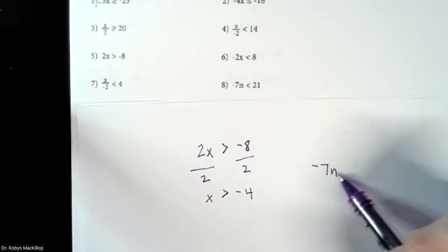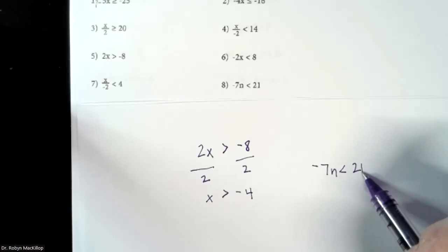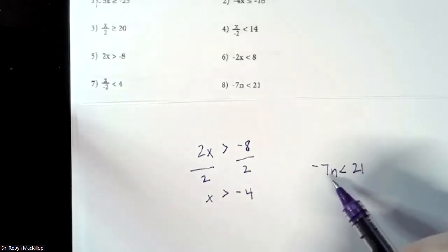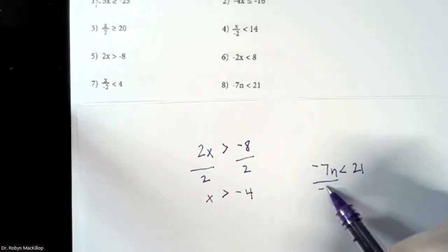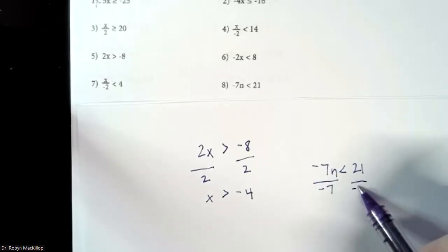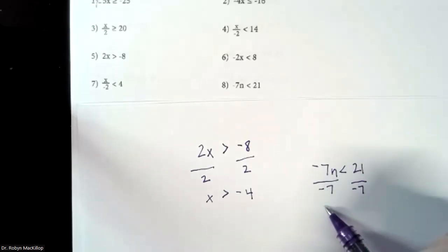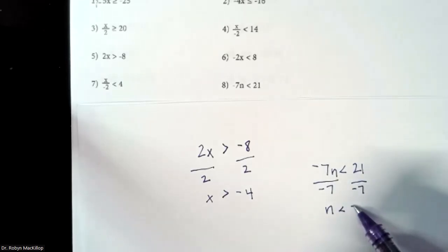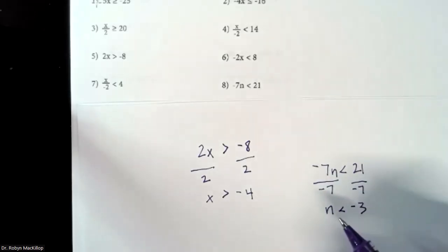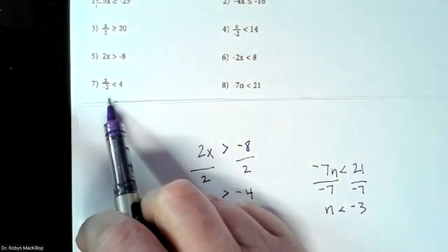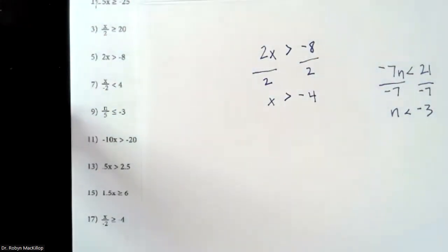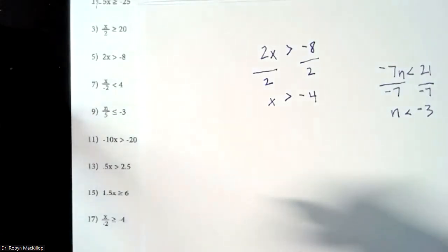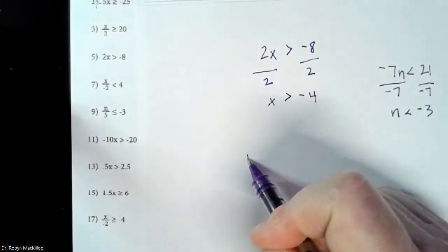Number 8: negative 7N is less than 21. You need to separate the number from the variable because you want a variable on one side, a number on the other. So we're going to divide out that negative 7, do that on both sides. Negative 7N divided by negative 7 is just N, less than 21 divided by negative 7, which is negative 3. Let's do a couple of the division problems. Rather than an equal sign, it's got an inequality.